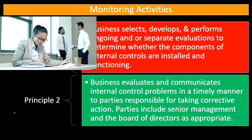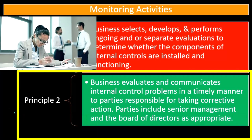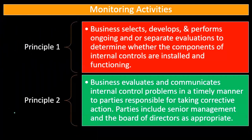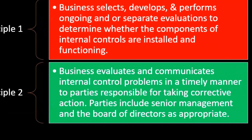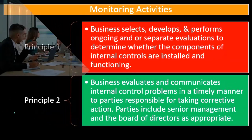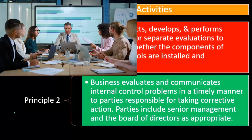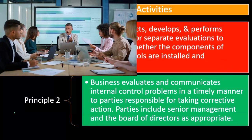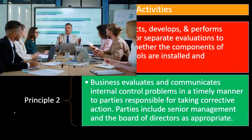Principle number two: the business evaluates and communicates internal control problems in a timely manner to parties responsible for taking corrective action. If there are problems — either in how the internal control is designed or how it's being implemented — we go to the appropriate level of management. Parties include senior management and the board of directors as appropriate. If there is a serious flaw with substantial risk, we would include the board of directors.